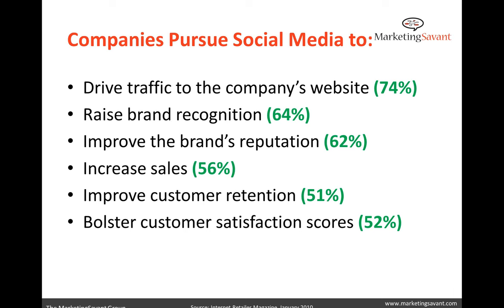Raising brand recognition — videos and blogs do that, though it's harder to measure for those in CPG. Improving a brand's reputation — we've seen this in large and small business. It's hard to put a value on that, although we can tell from sales year to year. As organizations improve reputation and credibility, we've seen sales improve 20%, 30% quarter-over-quarter by really managing that online reputation. Increasing sales, improving retention, and bolstering satisfaction scores — organizations that track NPS or net promoter score typically monitor that satisfaction score.